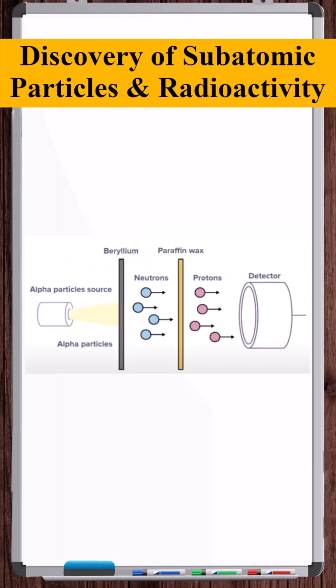In 1932, James Chadwick performed an experiment where he shot alpha particles at a thin sheet of beryllium. This resulted in neutron emission radiation, which allowed for the discovery of the neutron.